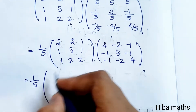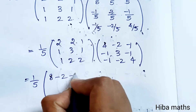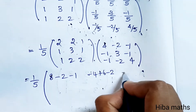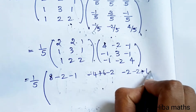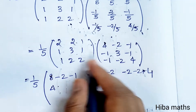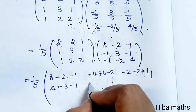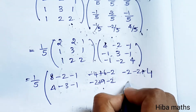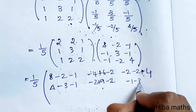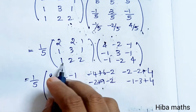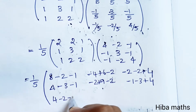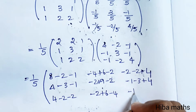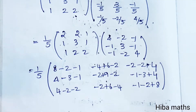Continuing the multiplication: we get -2, -2 plus 4; 4 minus 3 minus 1; minus 2; minus 2, minus 2; minus 2, minus 1 minus 3 plus 4. At the last row first column: 4 minus 2 minus 2; minus 2 plus 6 minus 4; minus 1 minus 4 plus 4 minus 2, minus 2 — equals 1.